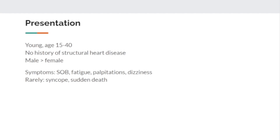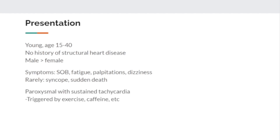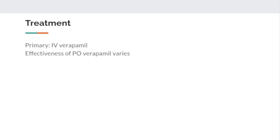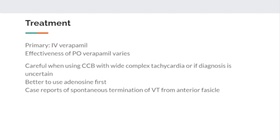Syncope and sudden death are rare. The tachycardia is typically paroxysmal but sustained — once they're in that fast rate, it is sustained, not coming and going — and it is triggered by exercise or caffeine. Termination typically requires an abortive antiarrhythmic. Much less commonly, patients have a chronic incessant dysrhythmia and present with a tachycardia-induced cardiomyopathy from years of being tachycardic.